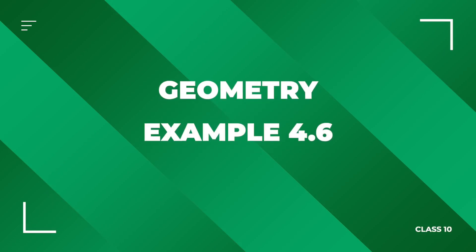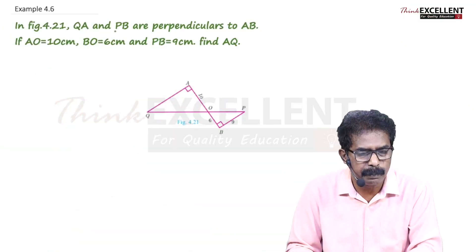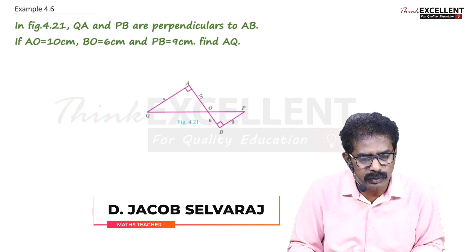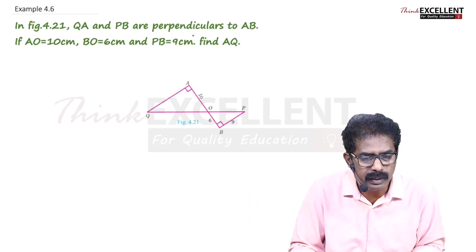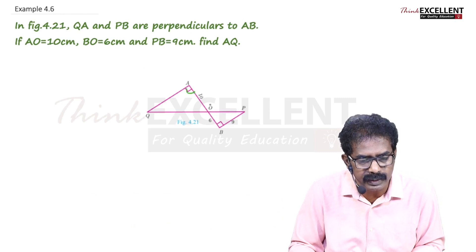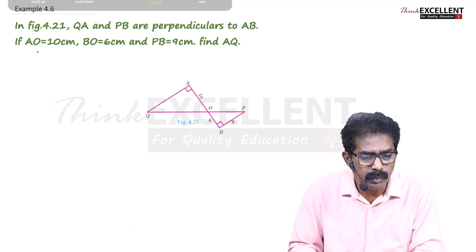Example number 4.6. In the given diagram, QA and PB are perpendicular to AB. So AB is a line, this angle is 90 degrees, this angle is also 90 degrees. Then AO is...